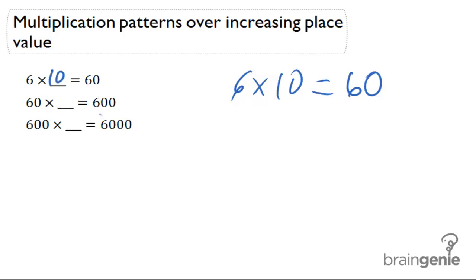But what about 60 times what number gives us 600? This one is also going to be 10 because 60 times 10 is 60 with a 0 added to it. And that's the same thing we see here.